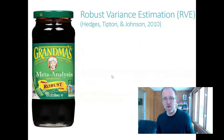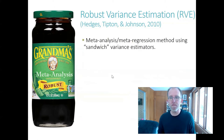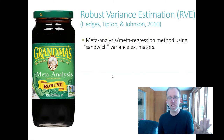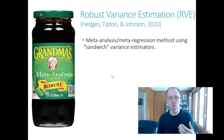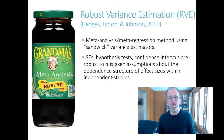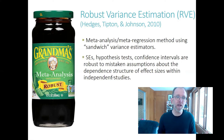One increasingly popular approach for handling dependent effect sizes is called robust variance estimation, or RVE. RVE uses formulas called sandwich estimators to construct standard errors, hypothesis tests, and confidence intervals that are robust to the modeling assumptions you make about the extent of dependence between effect sizes. In other words, you can get standard errors and confidence intervals that still work even if certain of your modeling assumptions are misspecified. It's kind of like buying extra insurance in case your model is flawed in some ways.